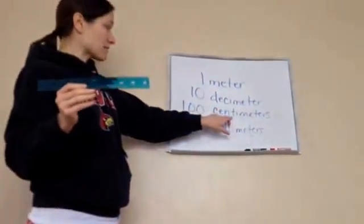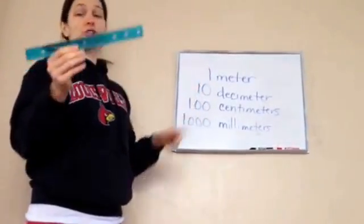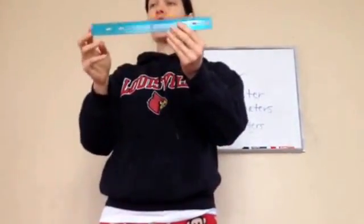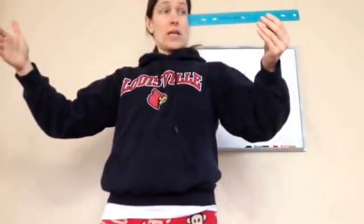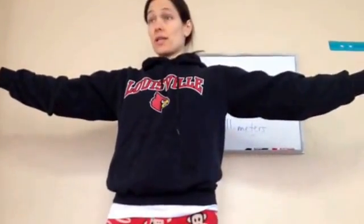And how many centimeters equals 1 meter? 100. So, is this close to 100? No. We're on our way. So, if I had two rulers, it would be 60 centimeters. Three rulers, 90 centimeters. So, I'm getting close, aren't I?